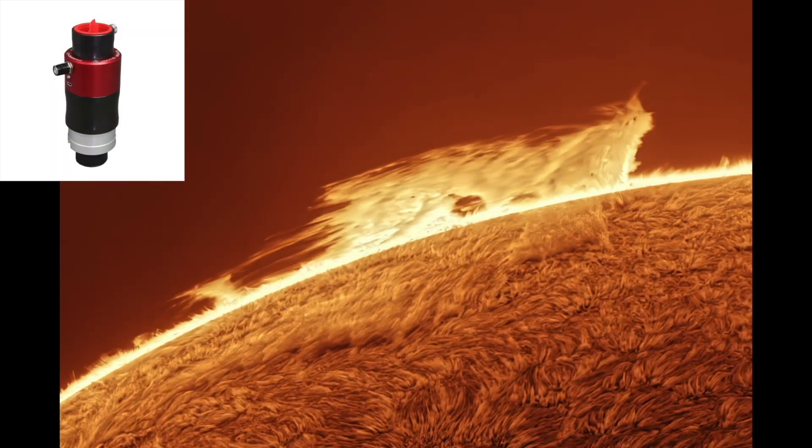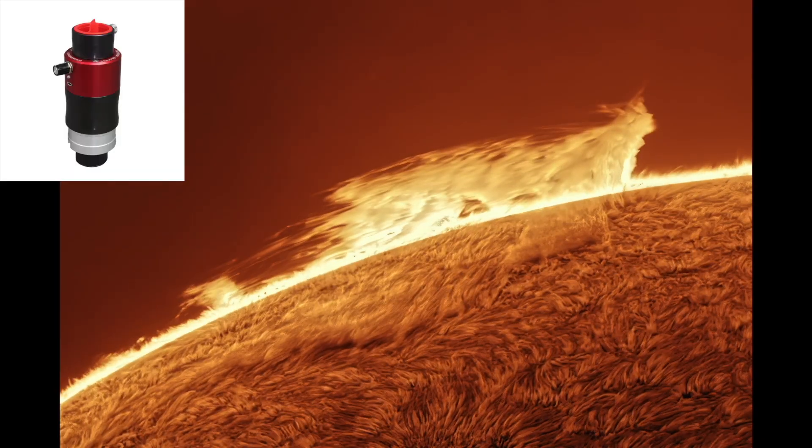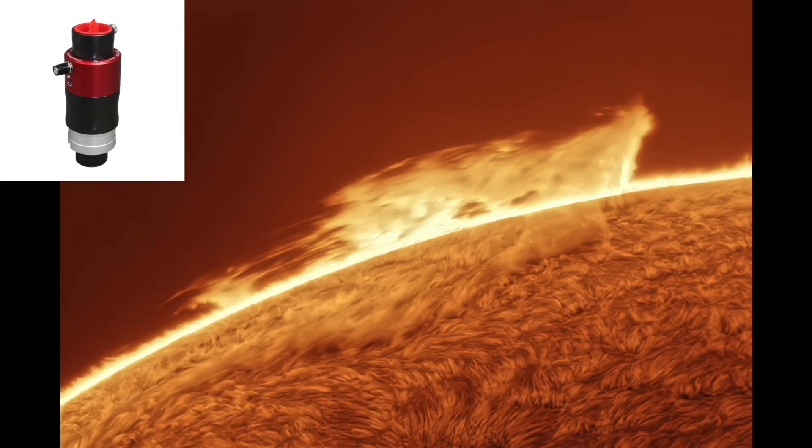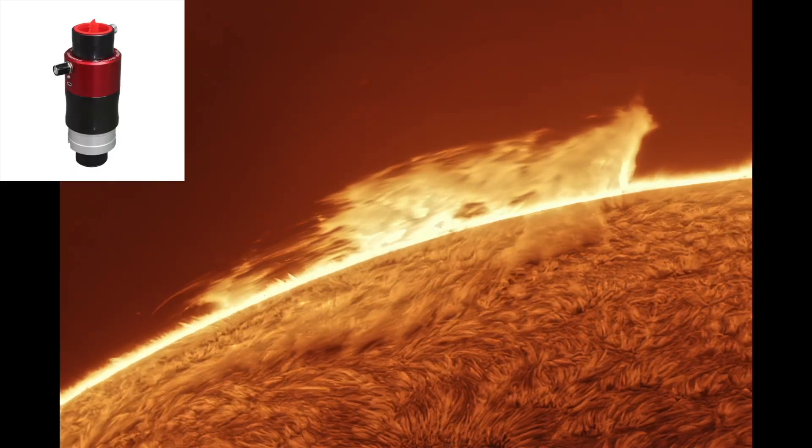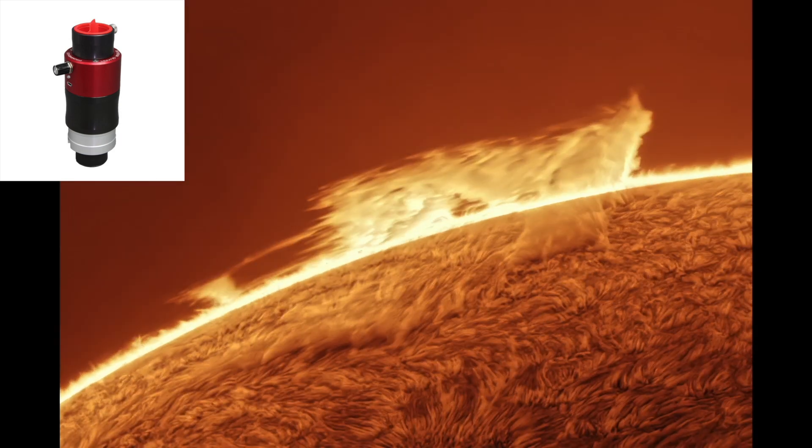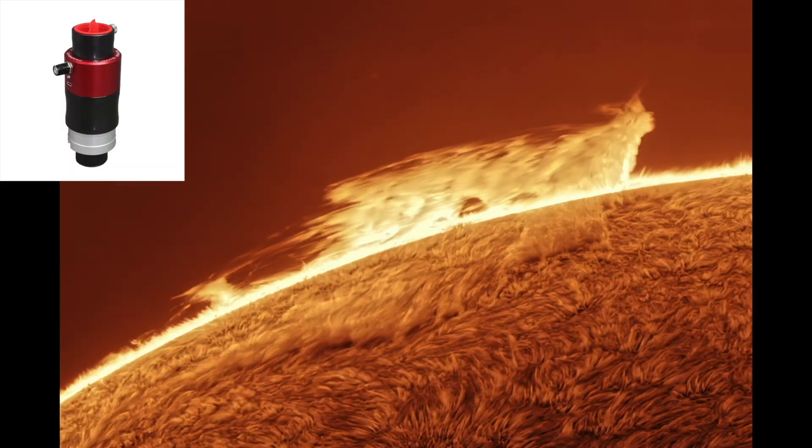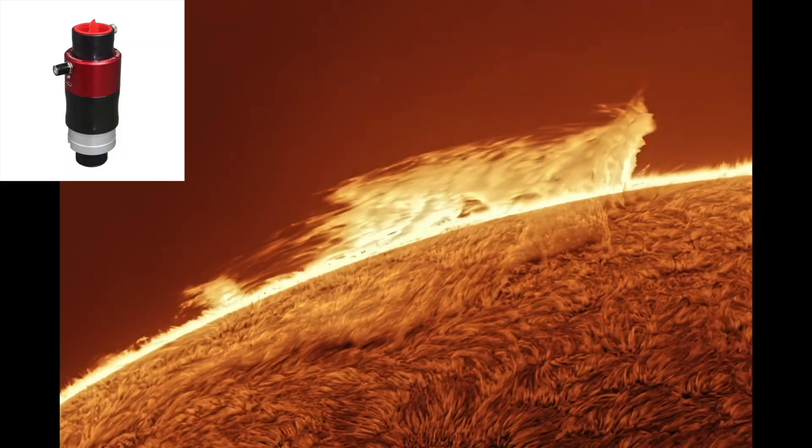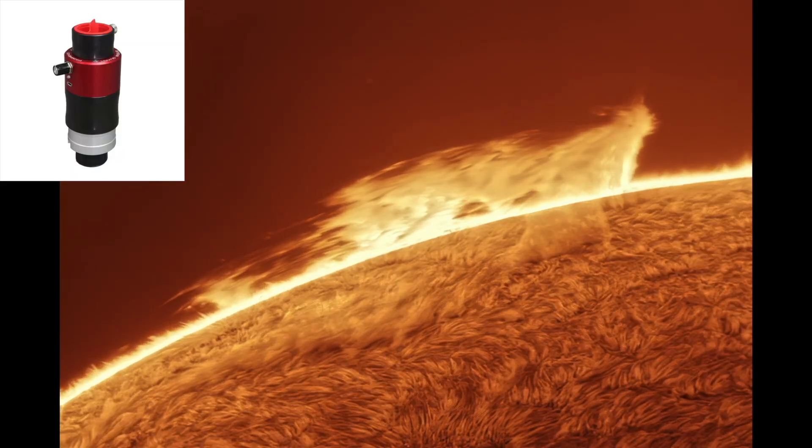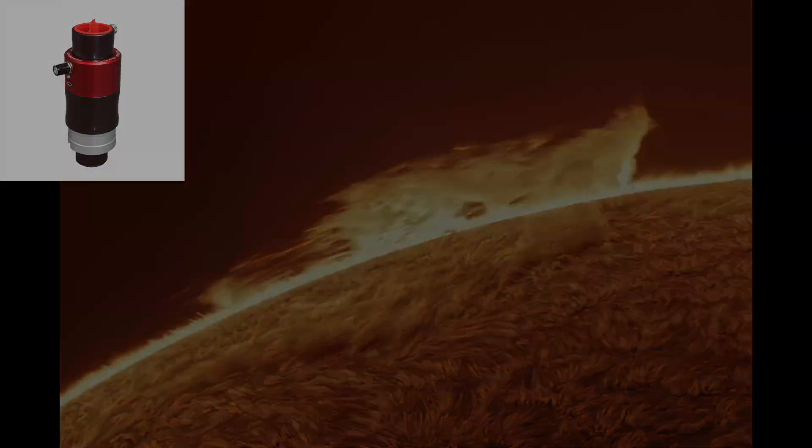Now here's my takeaway. The Daystar Quark has brought hydrogen alpha observing to thousands of people and offers a reasonable value for the price. Although it should be said you can buy a complete 50mm hydrogen alpha telescope from Lunt for less money. Many users are very satisfied with their Quarks. And I have a good one that has produced outstanding photos. However, community reports and independent measurements show significant unit-to-unit variation and service concerns. So it's important to go in with realistic expectations.